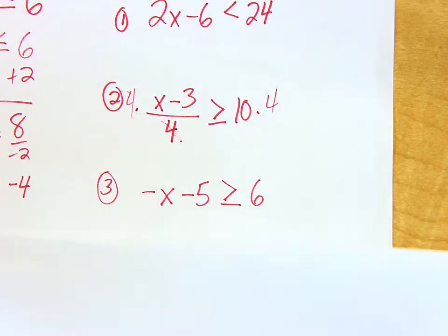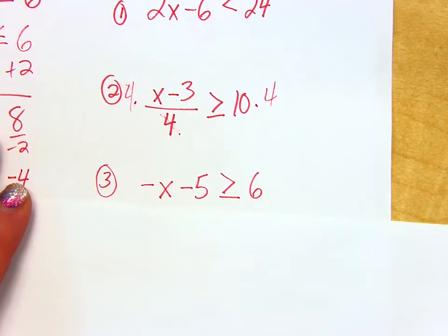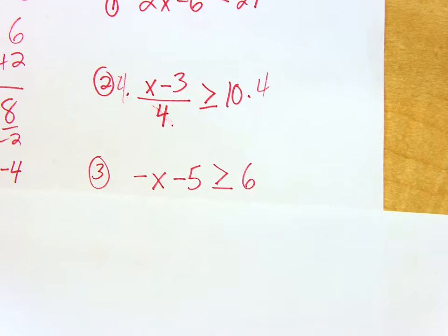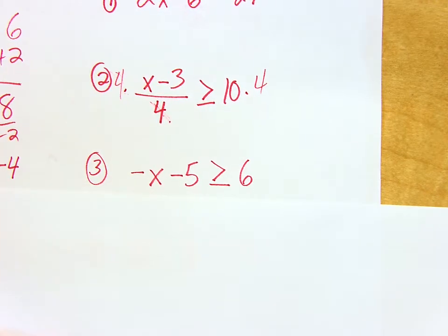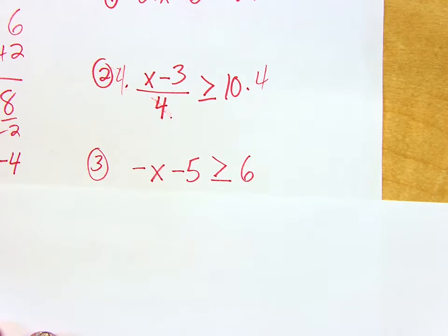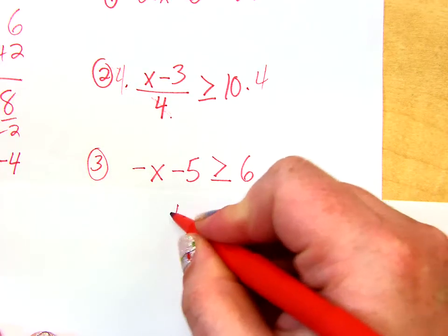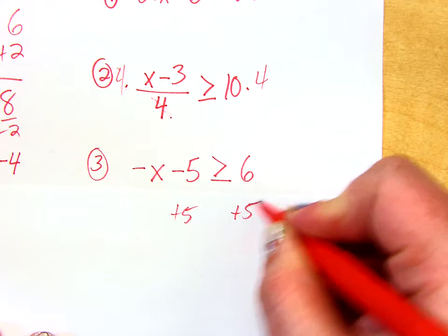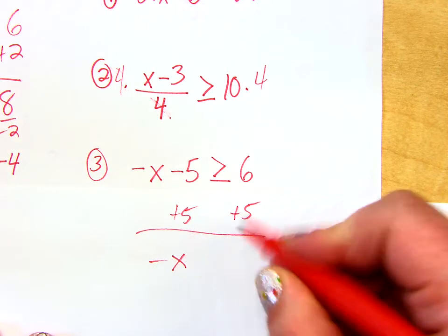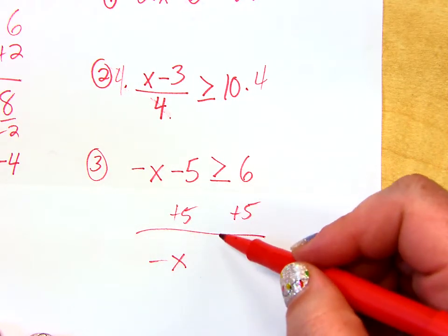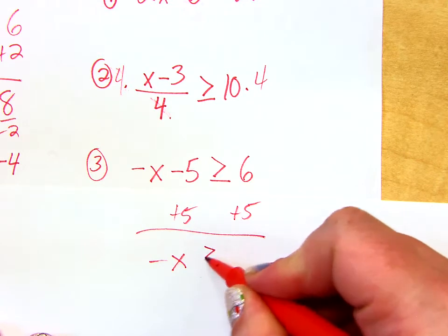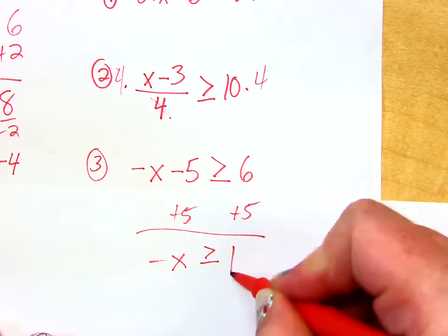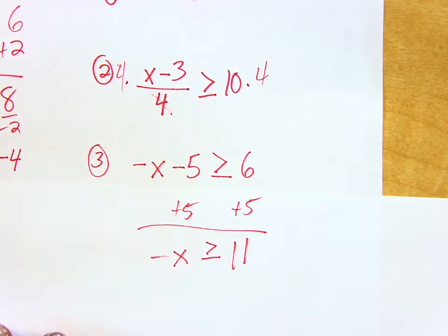I gave you this. So what would you do first, Alexis? Add 5 to both sides. Perfect. Add the 5. So now I have negative x. Do I flip this symbol? Nope. No, not yet. I didn't multiply or divide by a negative yet.